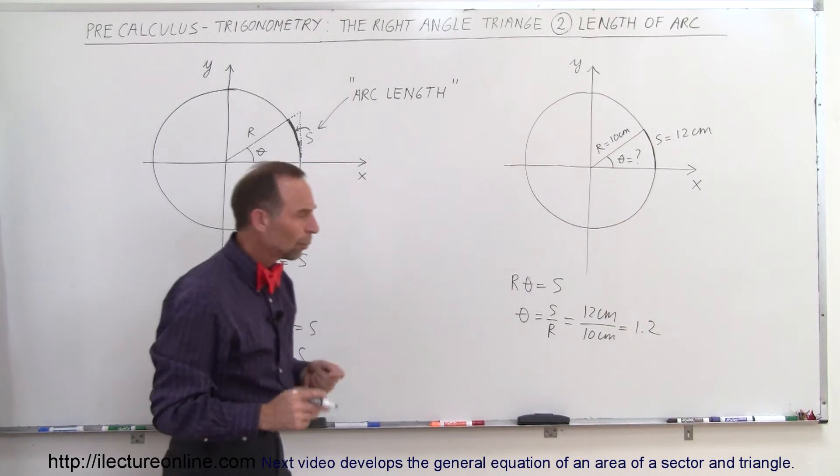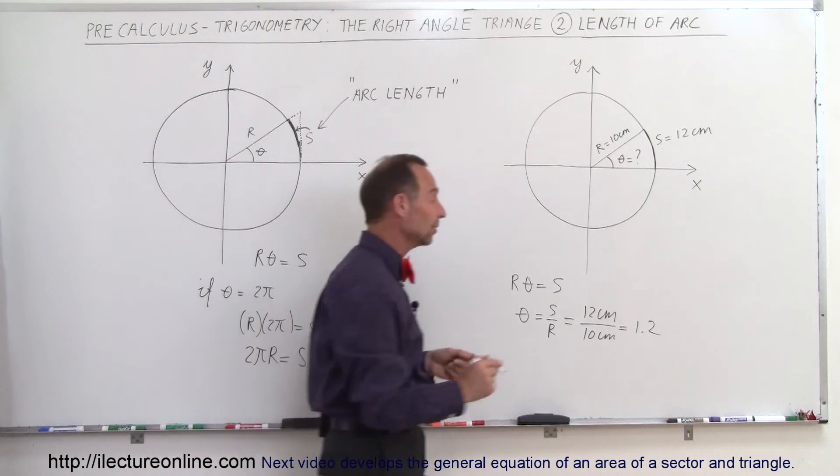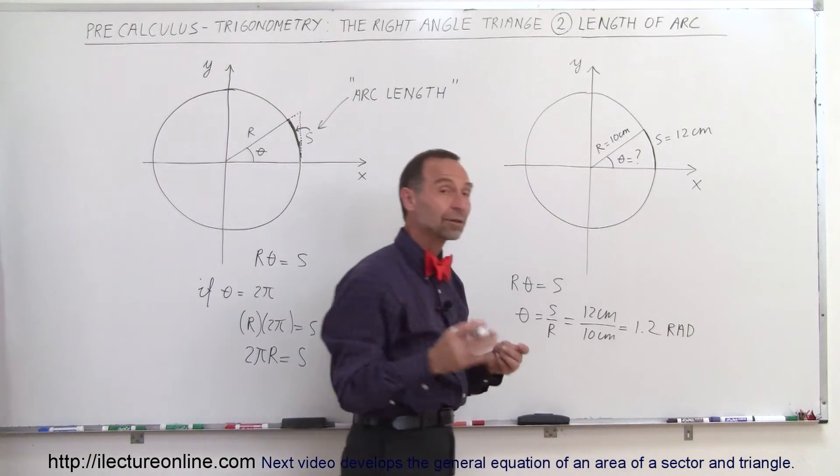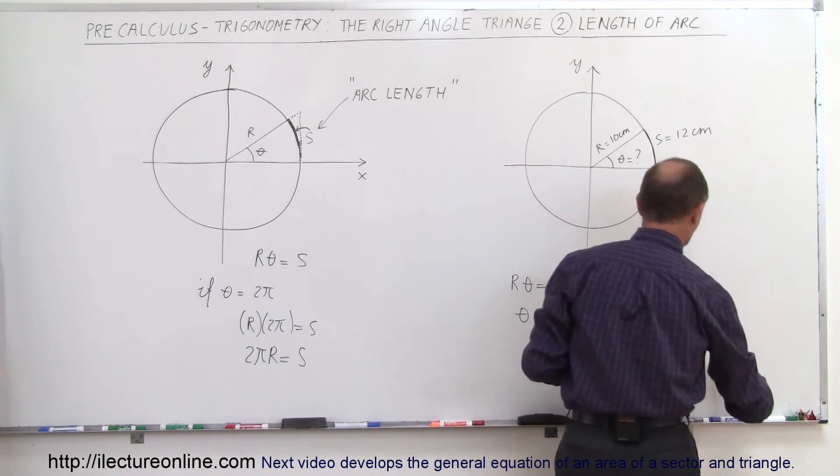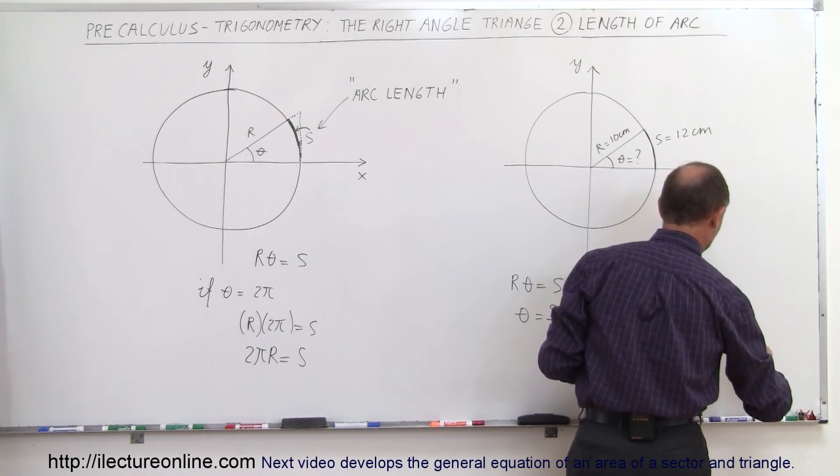Now you'll wonder to yourself, 1.2 what? Degrees? Oh, not degrees—that is 1.2 radians. And so if you want to now find the angle in degrees, we have to do that conversion, and the conversion is that 180 degrees equals π radians.